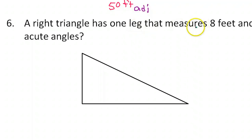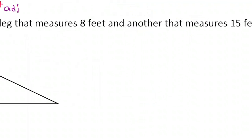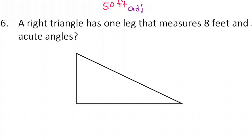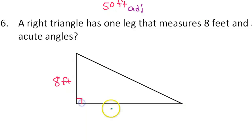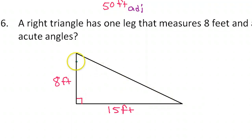So one leg is eight and another is 15. This will be my eight-foot leg, and this one is 15 feet. We're supposed to find the measures of the acute angles of this triangle.